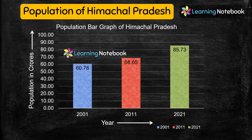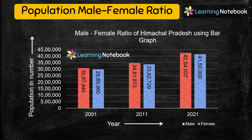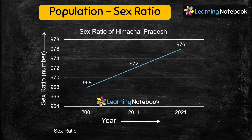After that, you can depict the Population of Himachal Pradesh through beautiful bar graphs as shown here. Double bar graphs can be used to show the male and female ratio of the population of Himachal Pradesh. Then you can take help of a line chart to show the sex ratio of the population of Himachal Pradesh.